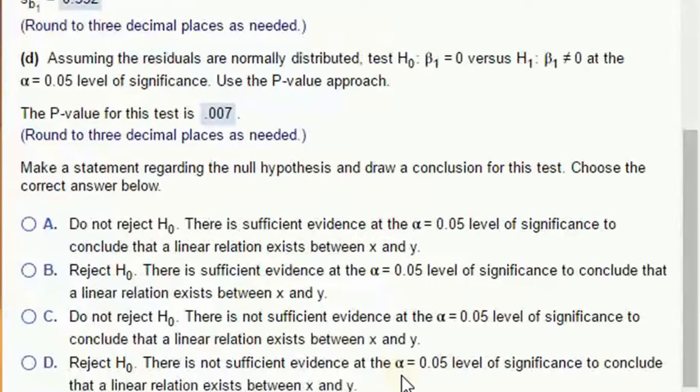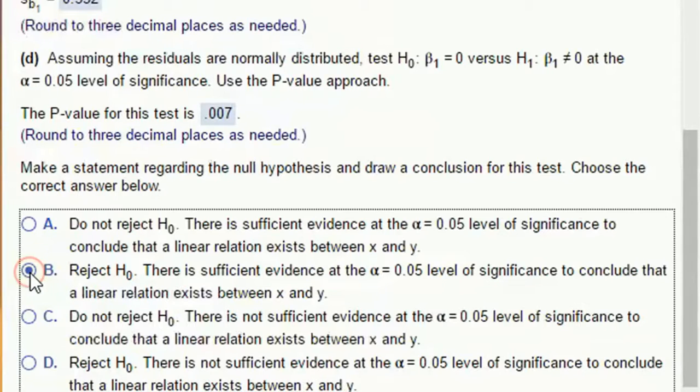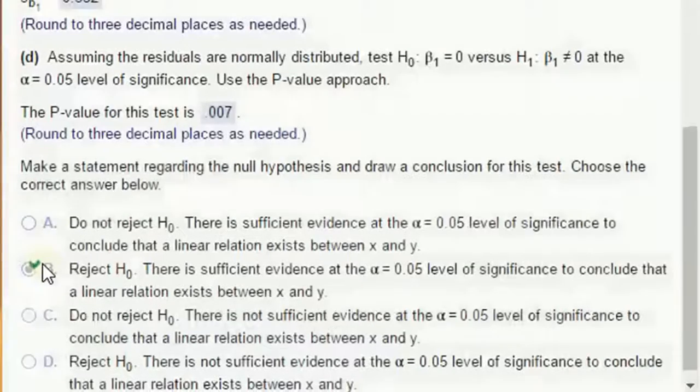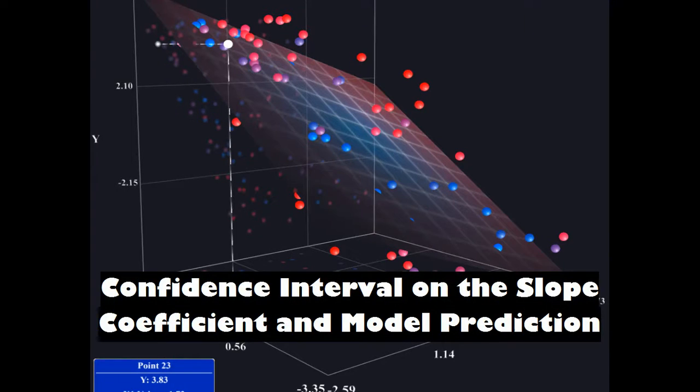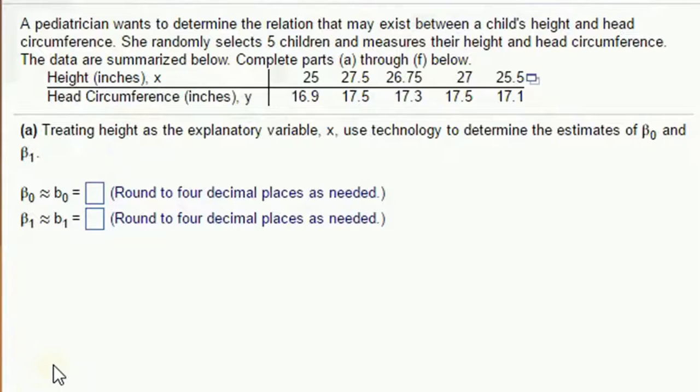So what would that p value mean? That's a really low p value. It's less than 0.05. It's less than almost anything, right? It's very, very, very small. We would reject the null hypothesis. There is sufficient evidence to conclude that a linear relationship does exist. That's what rejecting the null hypothesis means for linear regression. We're rejecting the hypothesis that there is no linear relationship.